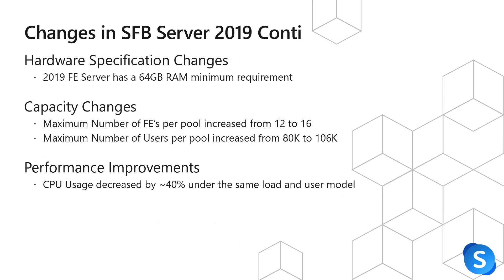More changes are on the hardware capacity side. A 2019 front-end server no longer has 32 GB of RAM as the minimum requirement — it is now 64 GB of RAM. With that, the maximum number of front ends per pool has increased from 12 to 16 front ends. Additionally, the maximum number of users per pool has increased from 80,000 to 106,000 based on those new front ends. There have also been some performance improvements, such as CPU usage being decreased by roughly 40% under the same load and user model of the current environment.